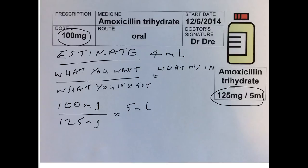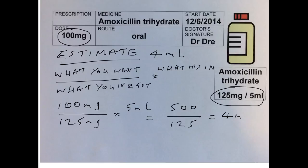So looking at this calculation, how could we do this if we didn't have access to a calculator? Well, what we could do is 100 times 5, which gives you 500 on the top, divided by 125 on the bottom. So 500 divided by 125 equals 4ml of liquid. Does that make sense? Our estimate said 4ml, and that ties in with our calculation.